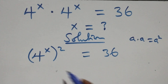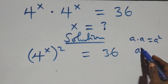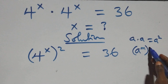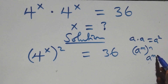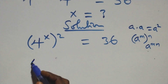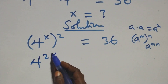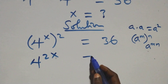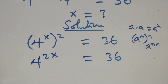This follows when we have a raised to power n, then raised to power m, which is the same thing as a raised to power mn. So this power multiplies and we have 4 raised to power 2x, equals to 36.